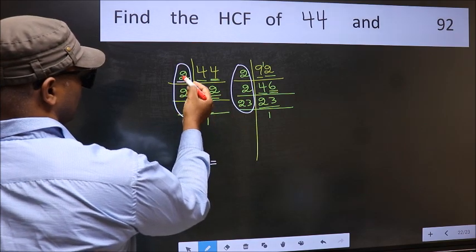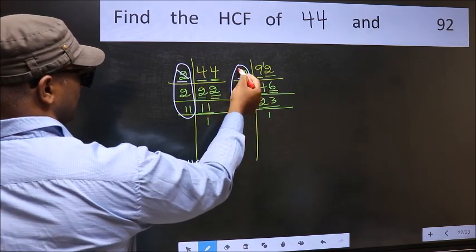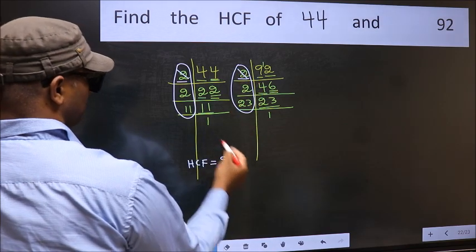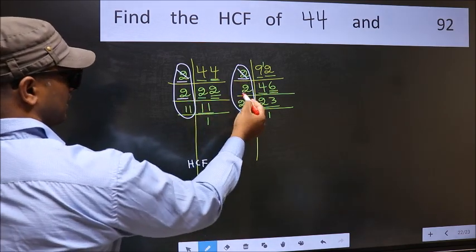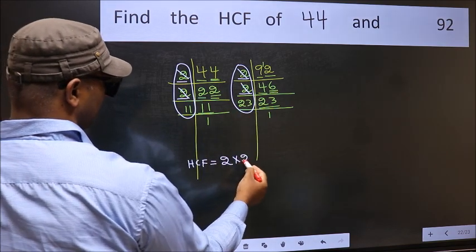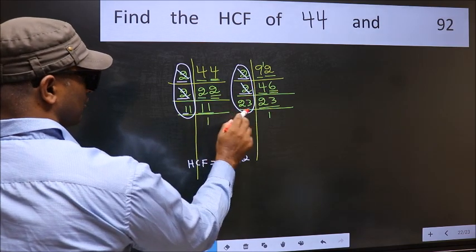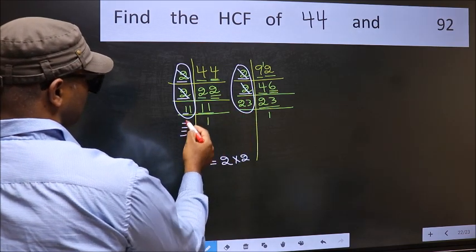Starting with the number 2: Do we have 2 here? Yes, so mark 2 here. Next number 2: Do we have 2 here? Yes, so mark 2 here. Next number 11: Do we have 11 here? No. No more numbers have been left out.